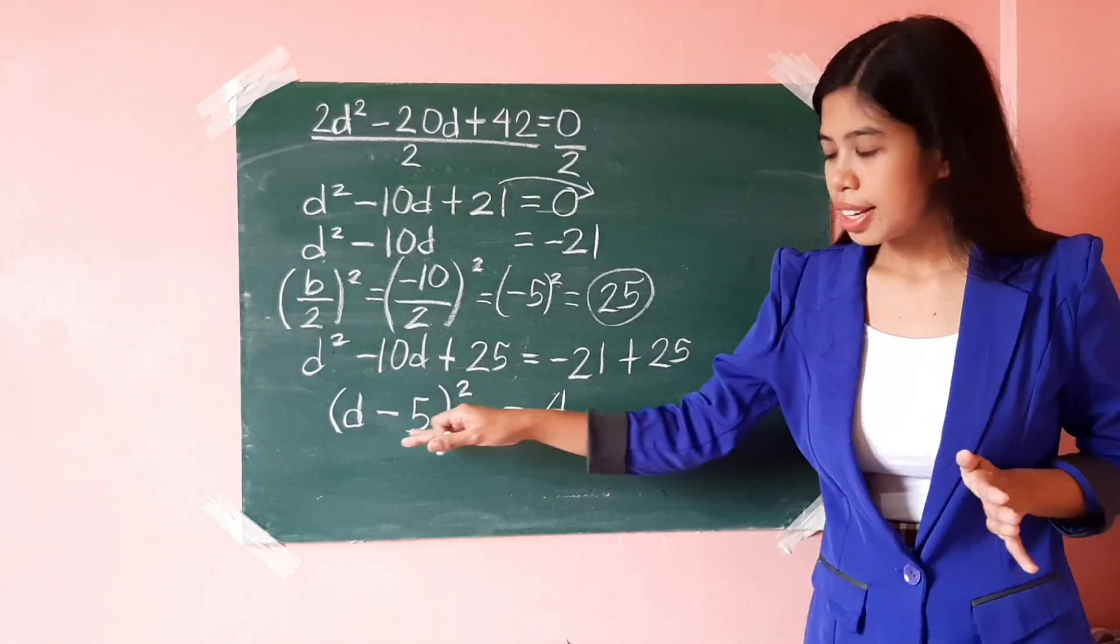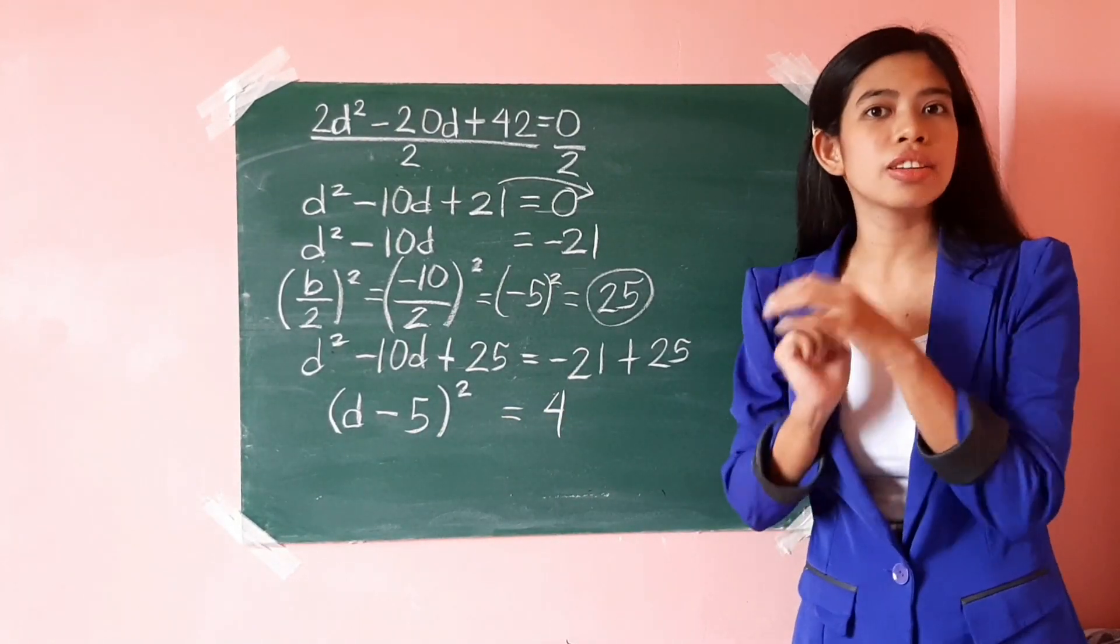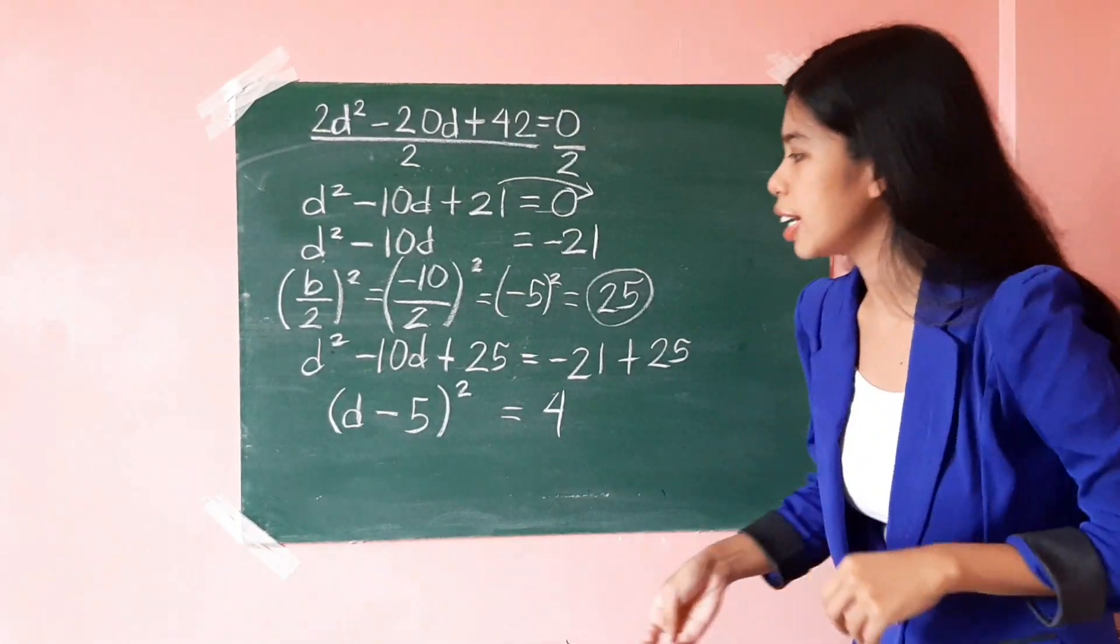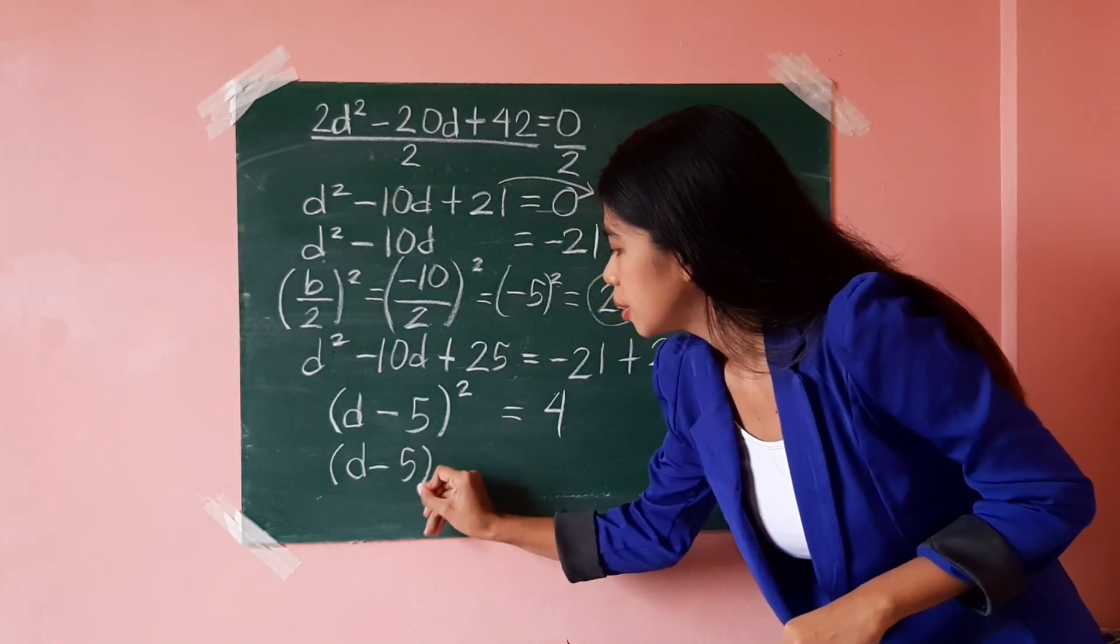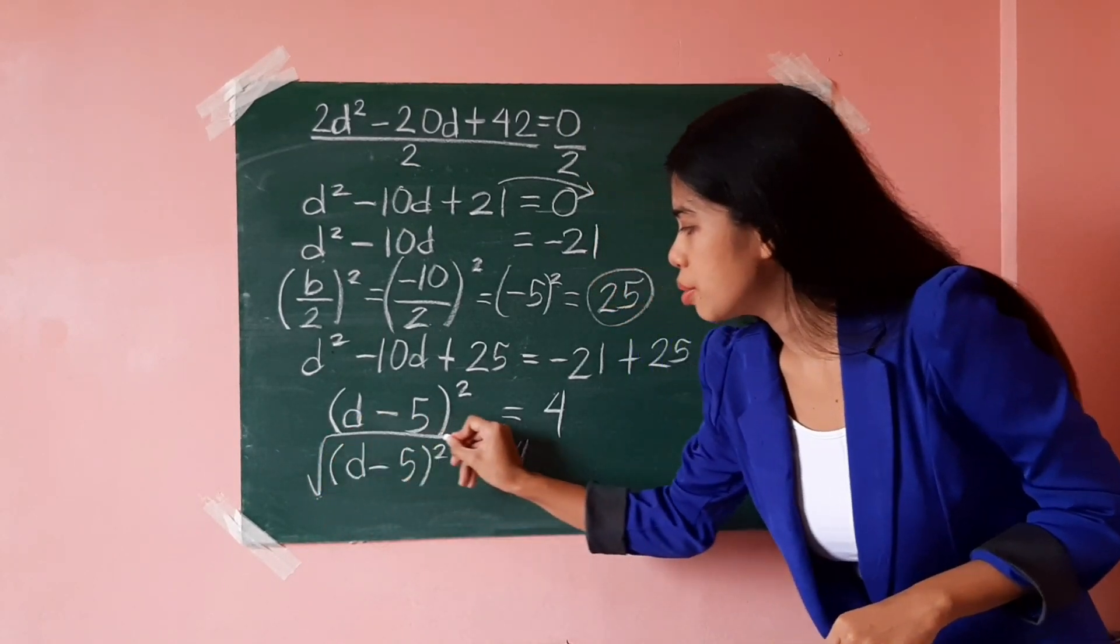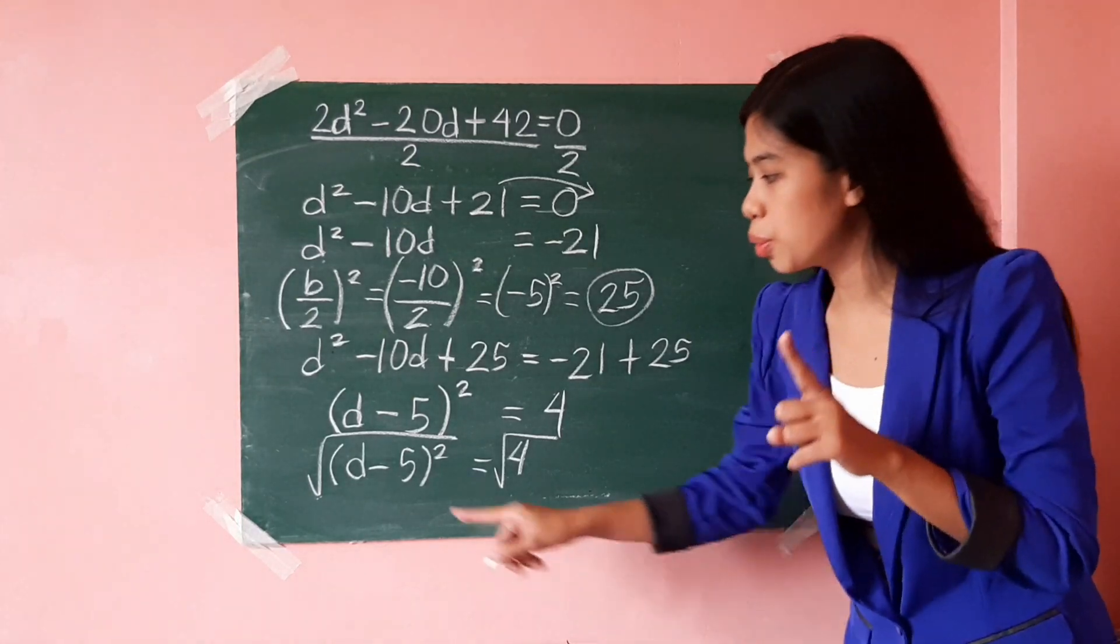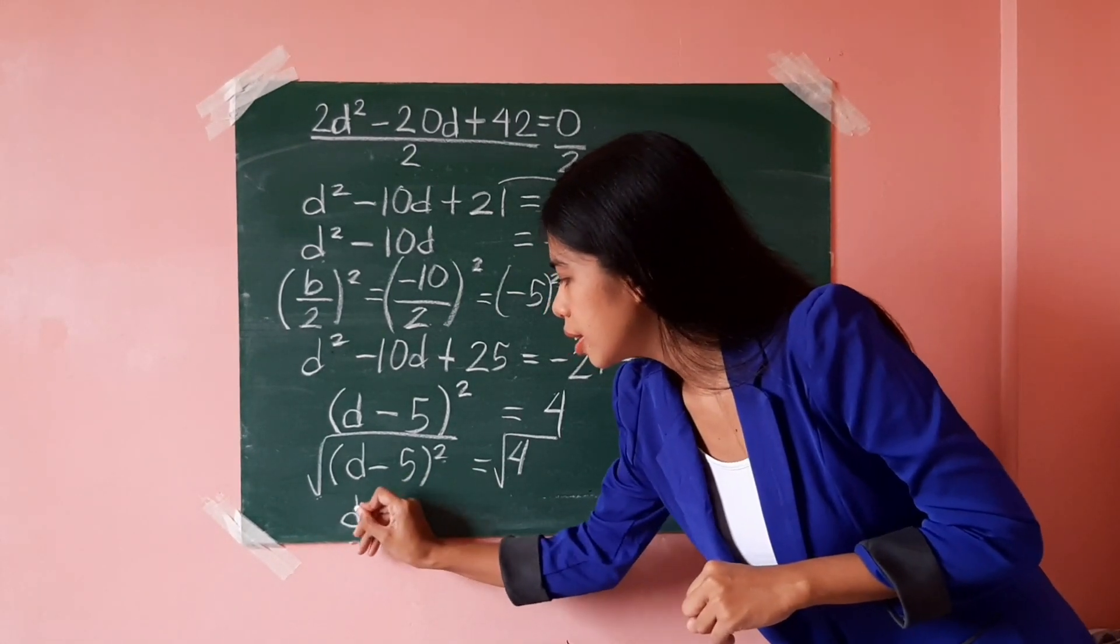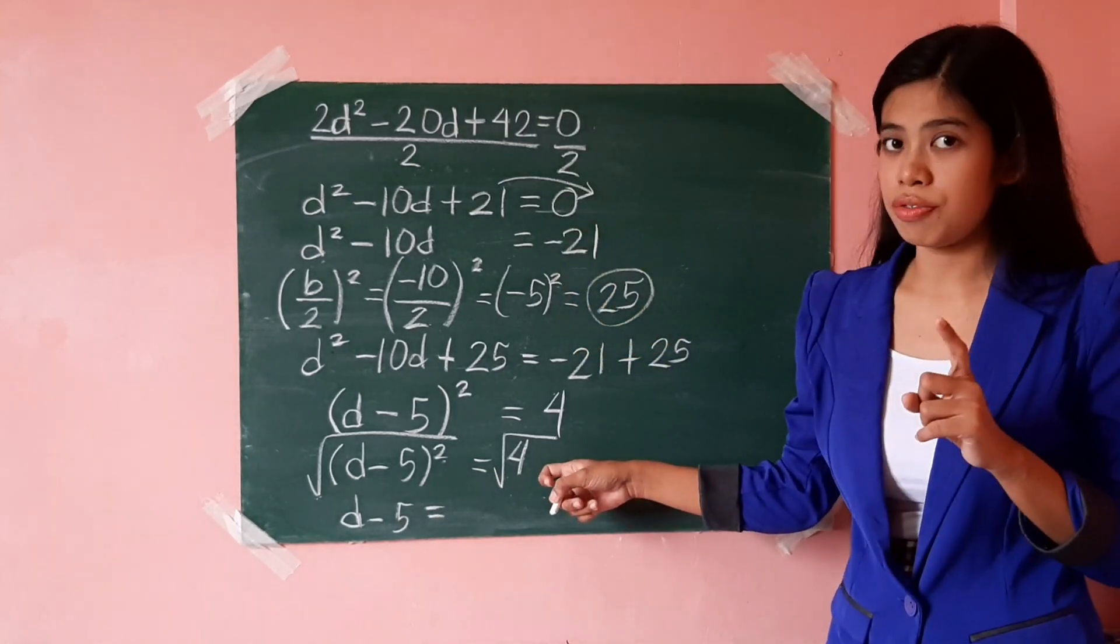Once you got here, all you have to do is to apply the first method of solving quadratic equation, which is extracting the square roots. So, extract the square root of both sides of the equation. And the square root of quantity d minus 5 squared is just d minus 5 equals, and the square root of 4 is positive negative 2.